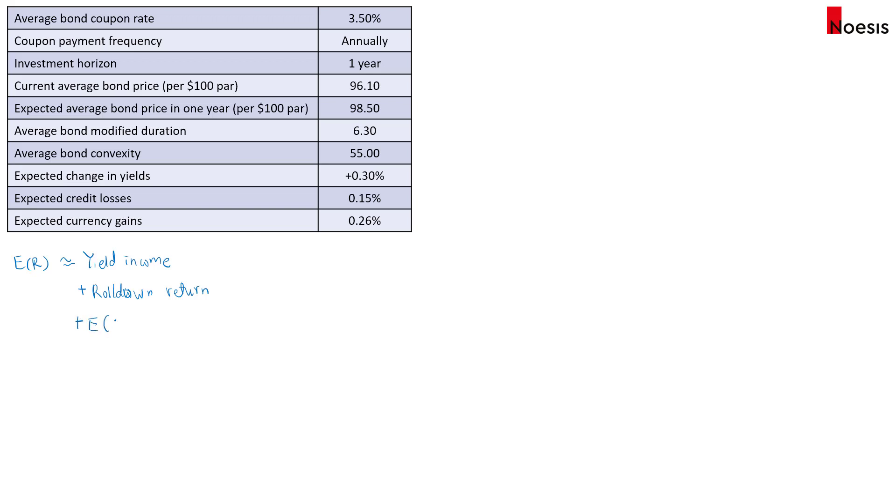And then we add in the expected change in price. And this is based on the investor's view on the yield curve changes. And then we minus expected credit losses. And then we add in the expected gain on currency. Or if there's losses, we will minus.